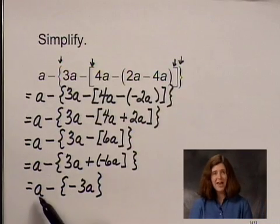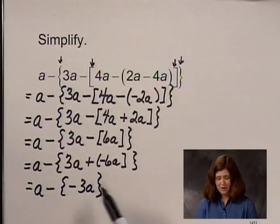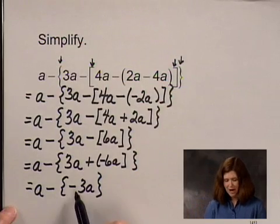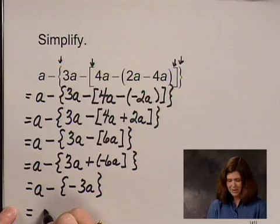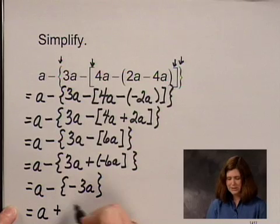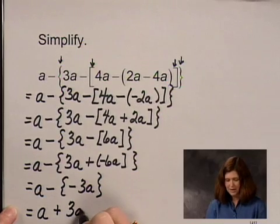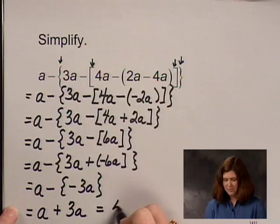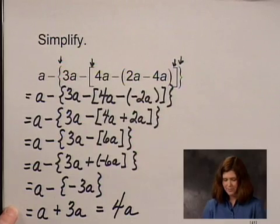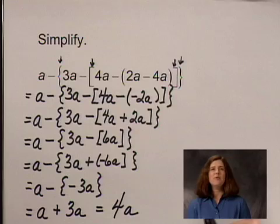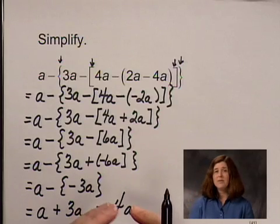And finally, I have A minus the opposite of 3A, which is the same thing as A plus positive 3A, which simplifies to 4A. Going step by step, working from the innermost set of parentheses out, I have simplified that most complicated expression to 4A.